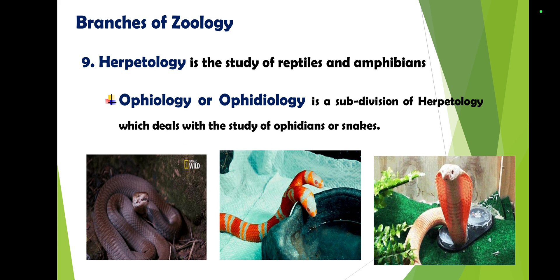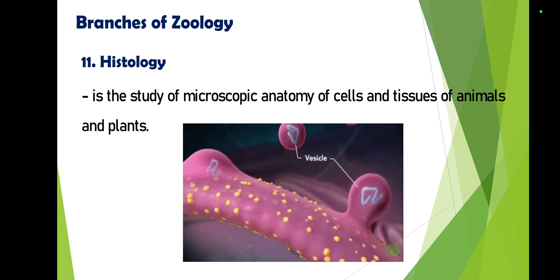Ophiology, also called ophidiology, is a subdivision of herpetology that deals with the study of snakes. All species pertaining to snakes — such as cobras, pythons, ring-neck snakes, and killback snakes — fall under this division. All different species pertaining to snakes are part of ophiology.